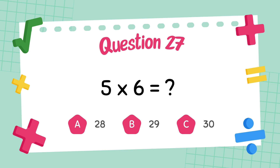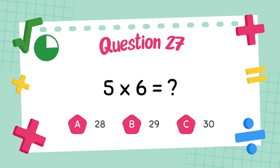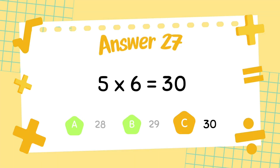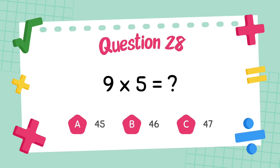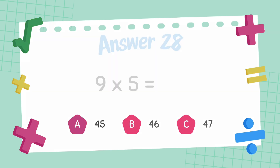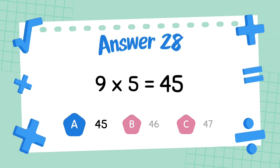What is 5 multiply 6? The answer is 30. What is 9 multiply 5? The answer is 45.